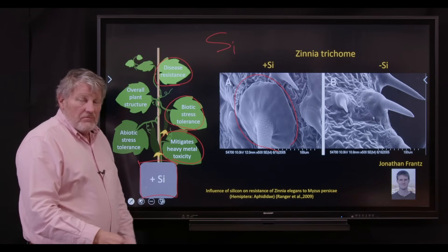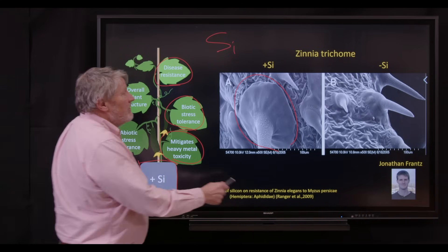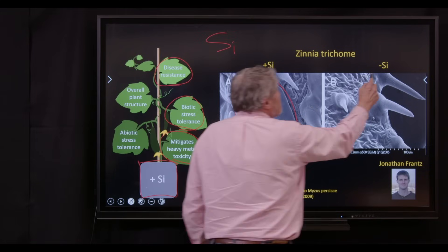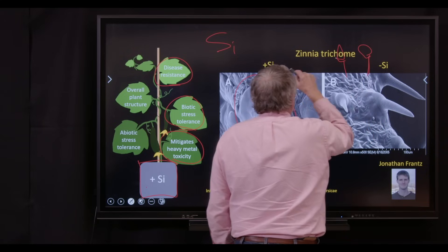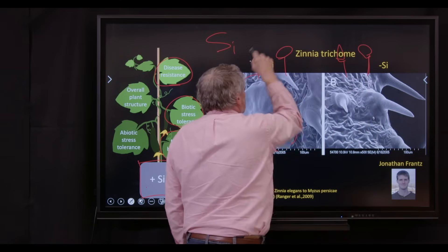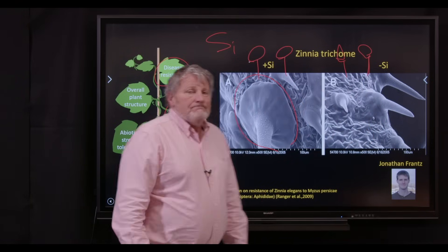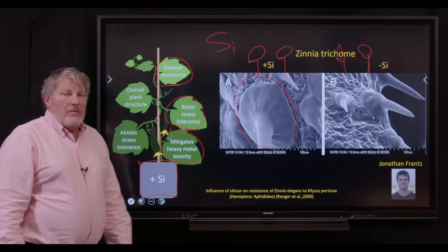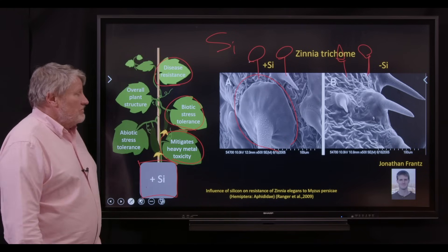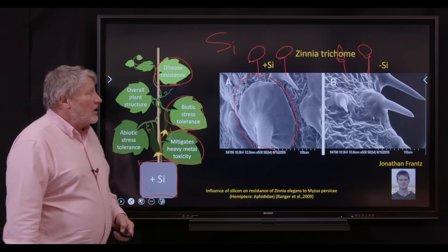Now, remember where the cannabinoids are? If I do a little picture here, they're in trichomes. And what are those trichomes made out of? Silica. So cannabis in particular benefits from ample silica in the root zone. The trichomes get tougher as well.